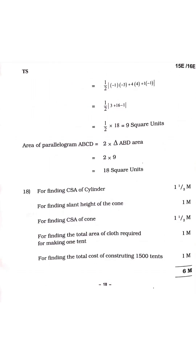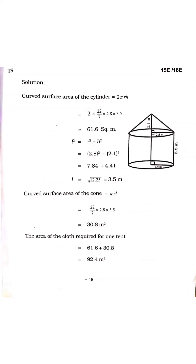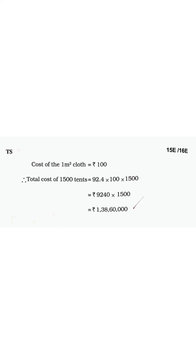For Question 18 on mensuration: for finding the CSA of the cylinder you get half a mark, for finding the slant height of the cone one mark, for finding the CSA of the cone half a mark, for finding the total area of cloth required for one tent one mark, and for finding the total cost of 1500 tents one mark. Like this your marks will be allotted. Best of luck for your exam — prepare well. Thank you.